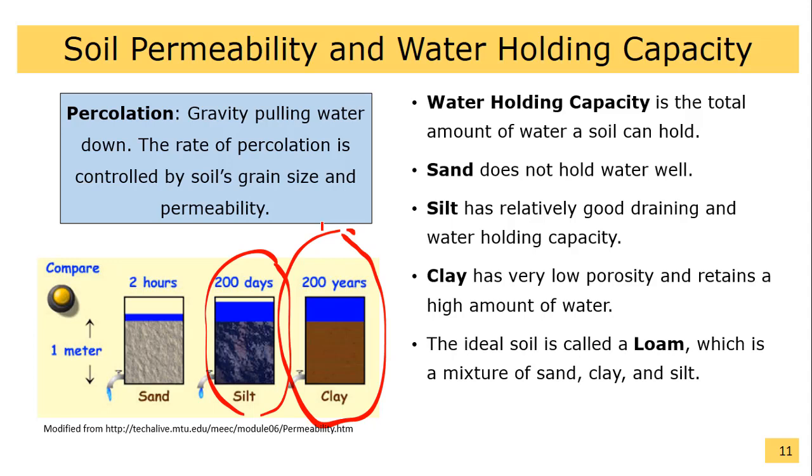The ideal soil is called a loam, which is a mixture of sand, clay, and silt. Loam holds water very well, but it is still porous enough to drain excess water.